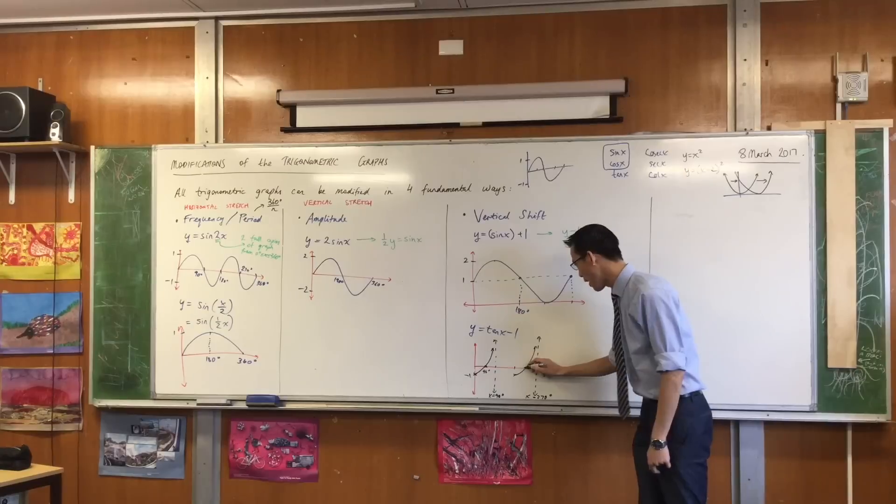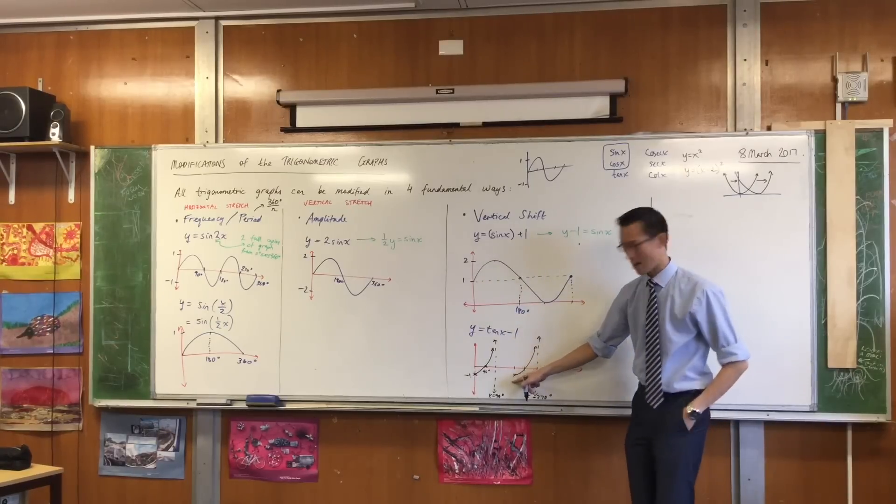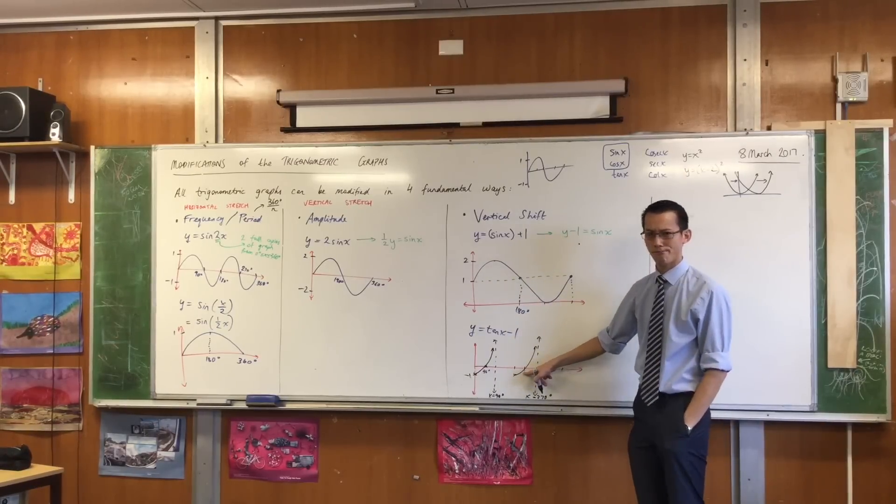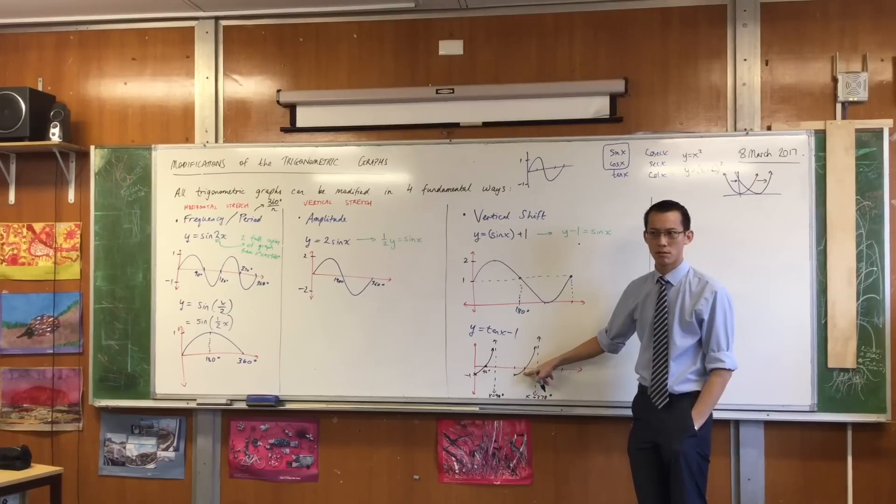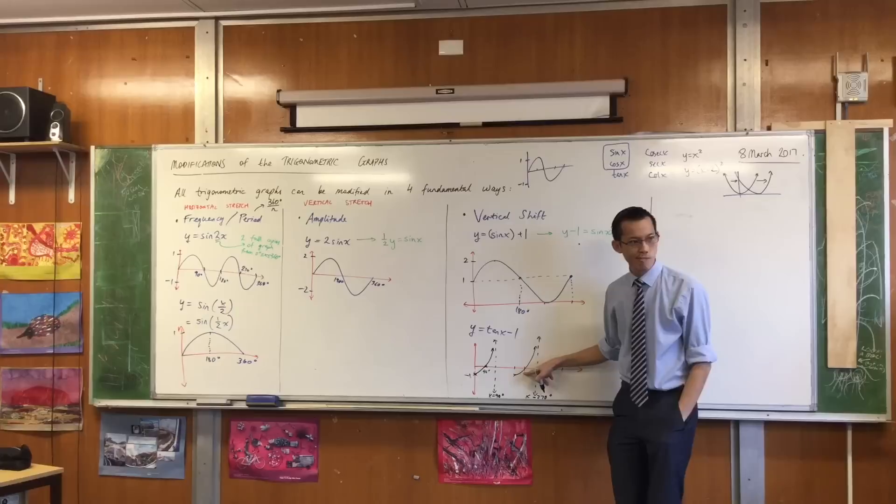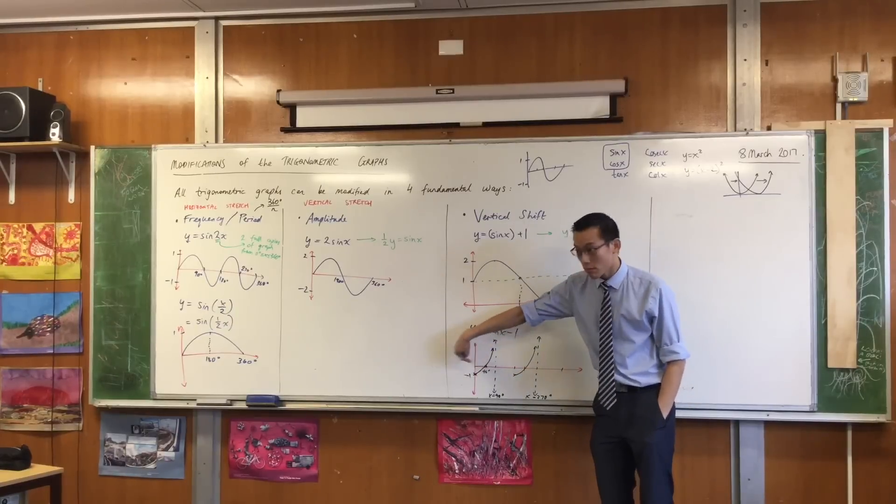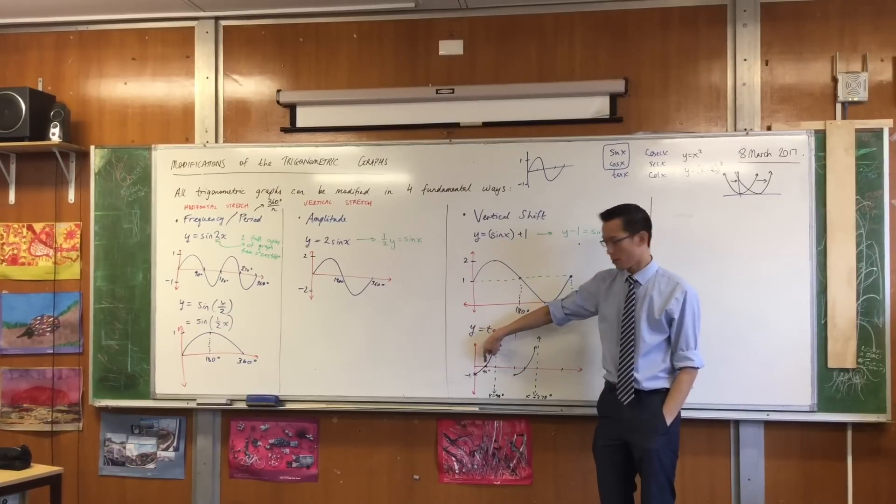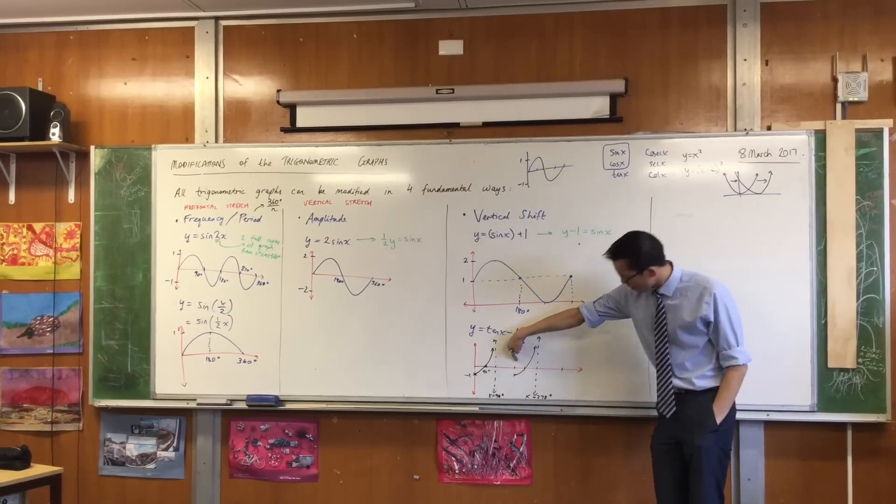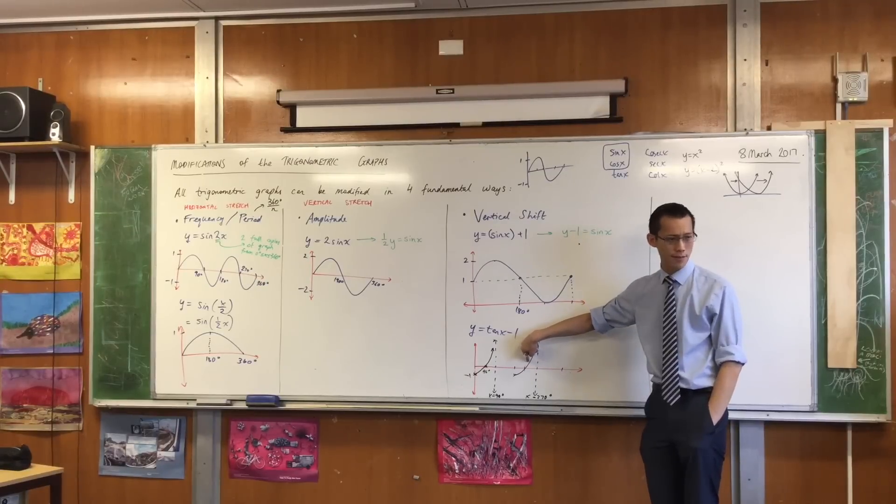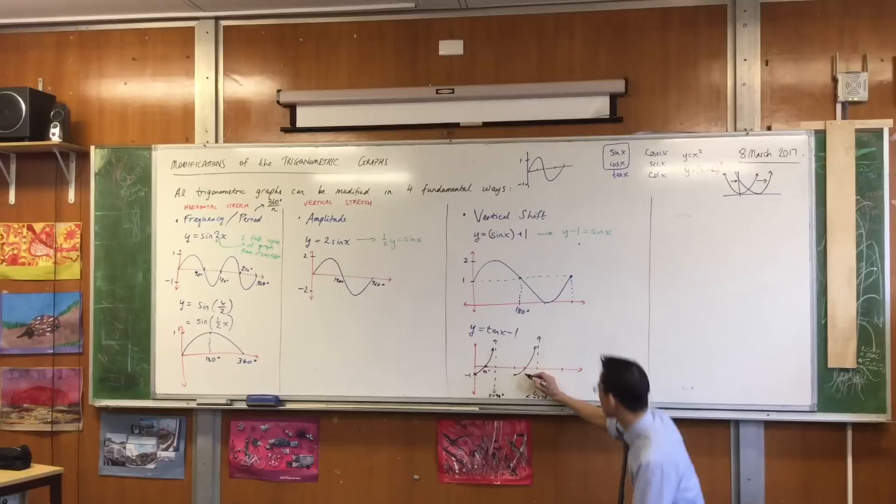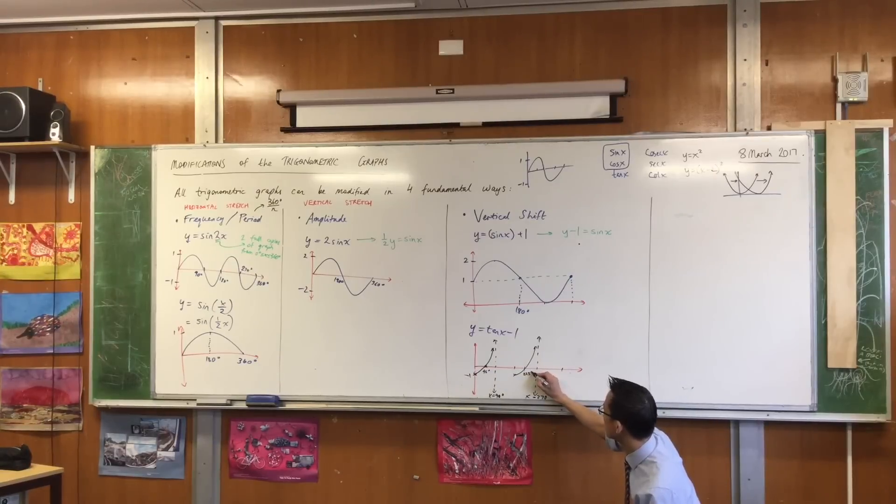Having this helps me work out where this and this are, right? What's this intercept going to be? It used to be 180. It's not 180 anymore, though, is it? How far did I have to get forward to get this intercept? 45. So I used to be at 180. I'm guessing now I'm going to be at 225. Does that make sense?